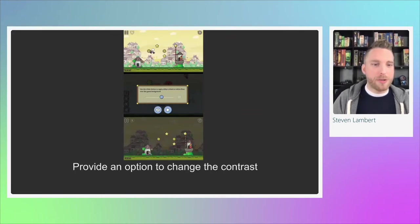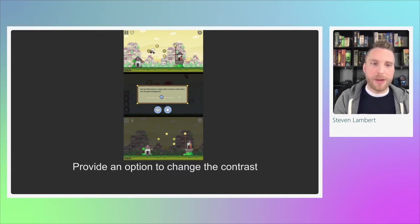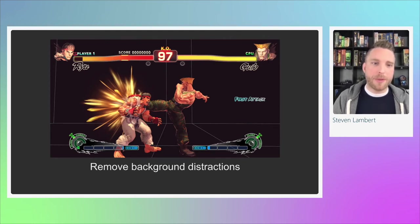Something you can do is provide an option to change the contrast. In the game Epic Eric, you can add a black layer between the background and the foreground elements and adjust its opacity — or make it completely white — letting users determine what looks best to help contrast with foreground objects. Another example is Street Fighter 4, where you could disable the background entirely, replacing the colorful arena with a black box to remove distractions and ensure foreground players contrasted well.